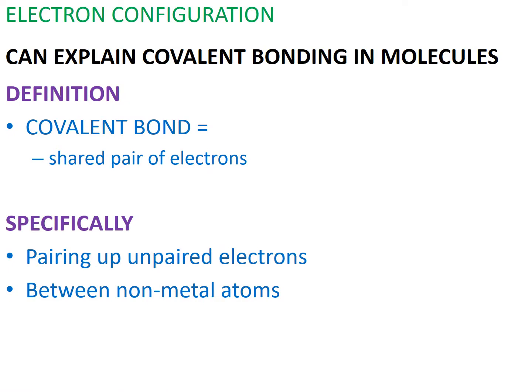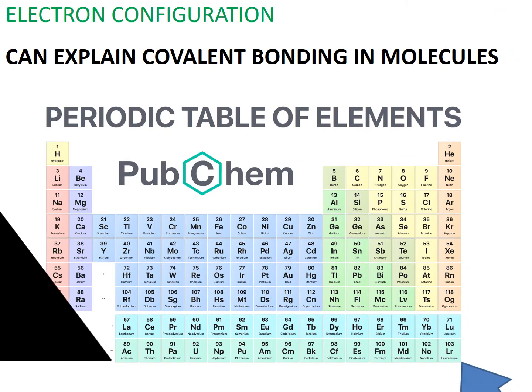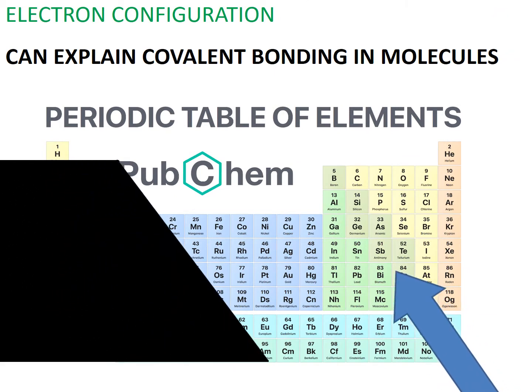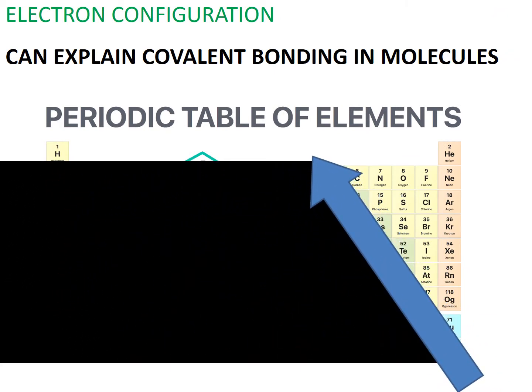A covalent bond is a shared pair of electrons. Specifically, it involves pairing up unpaired electrons between non-metal atoms. And don't forget, non-metal atoms are on the right side of this arrow.